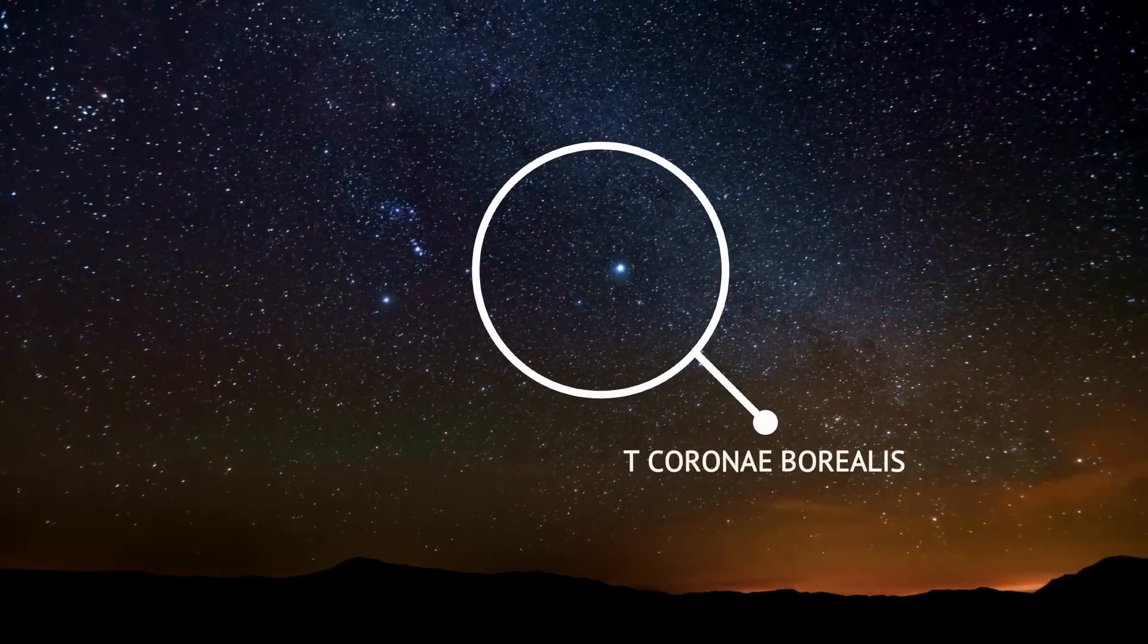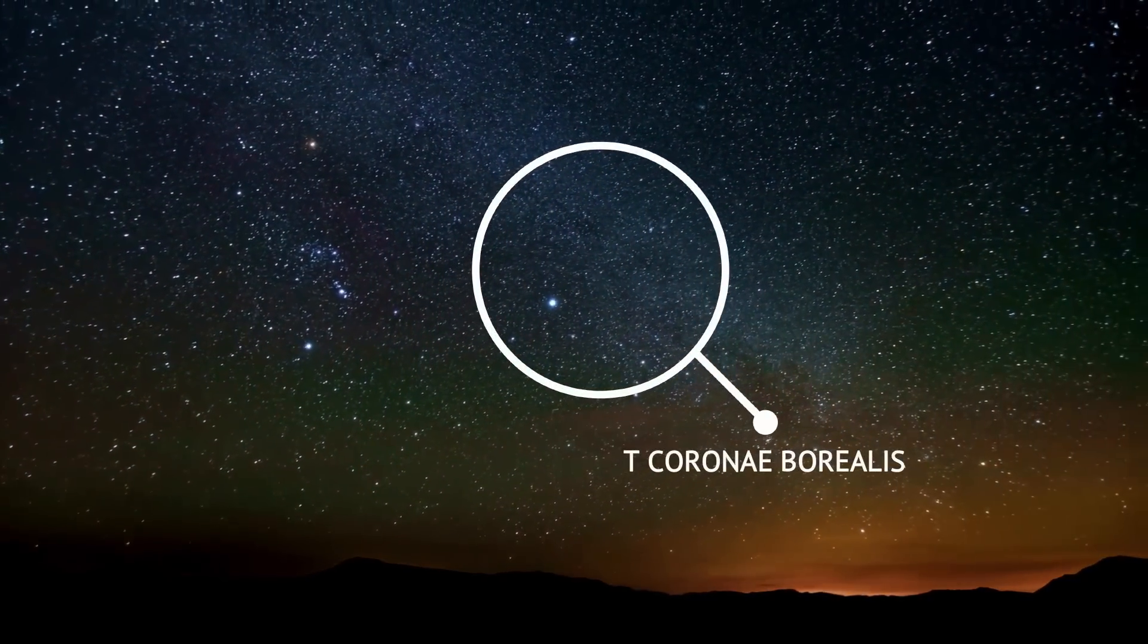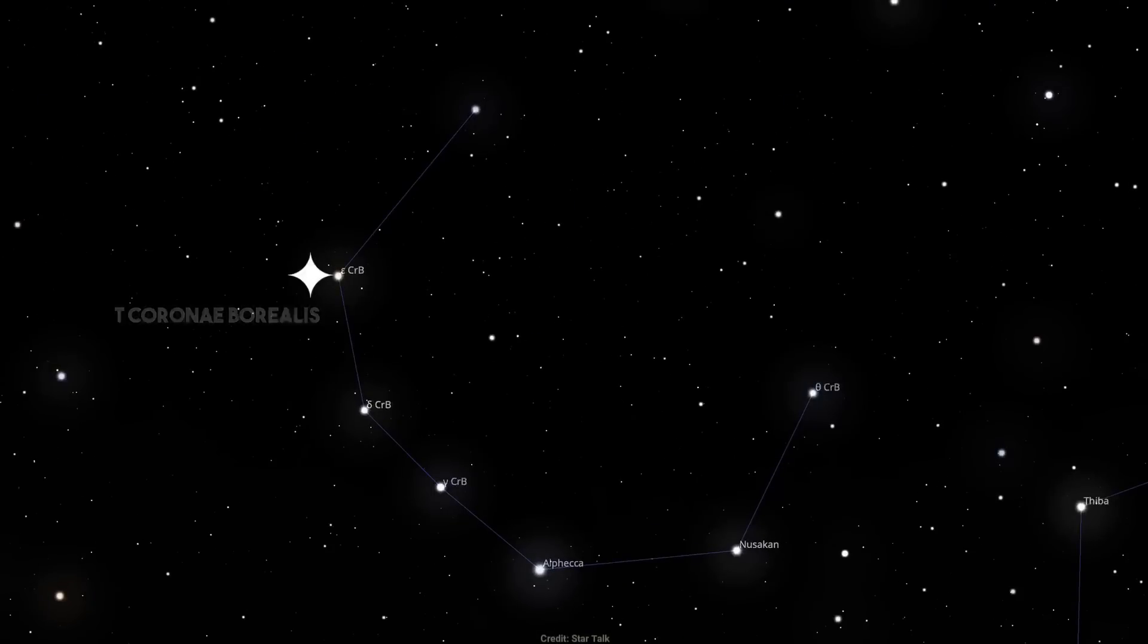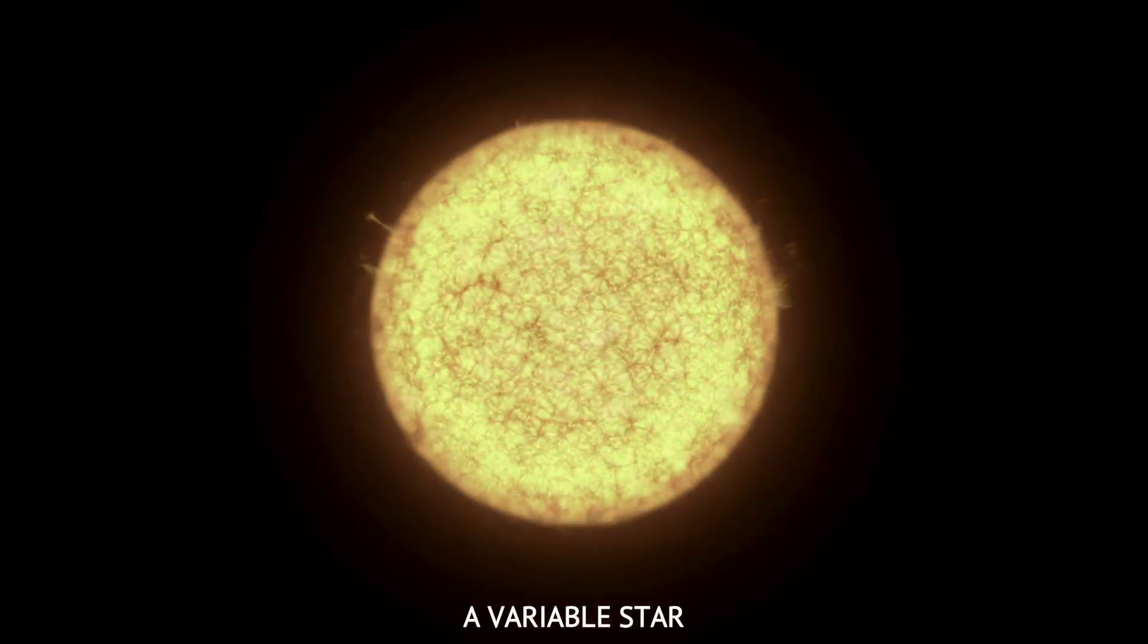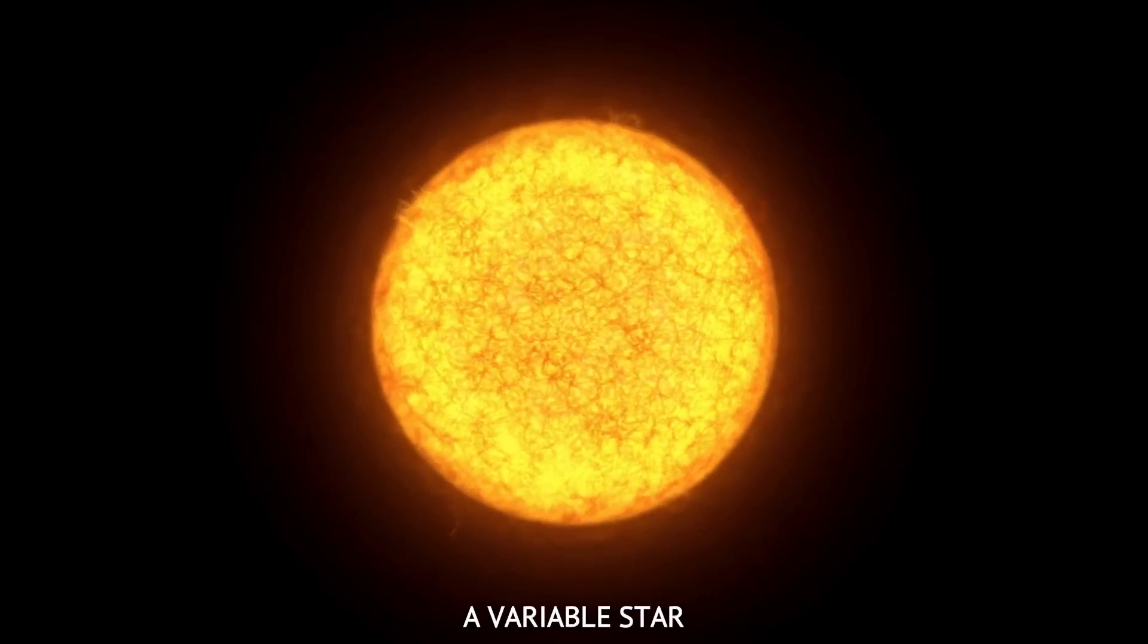The star he saw was T Coronae Borealis, a variable star in the constellation Corona Borealis, also known as the Northern Crown. A variable star is a star that appears to change brightness from Earth's perspective over time.